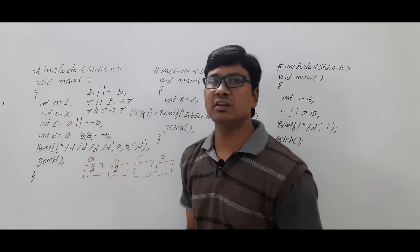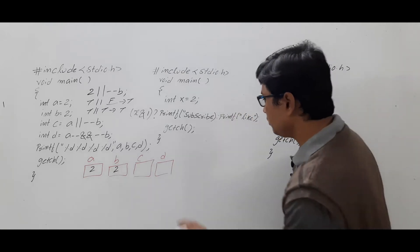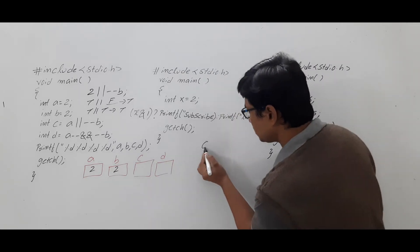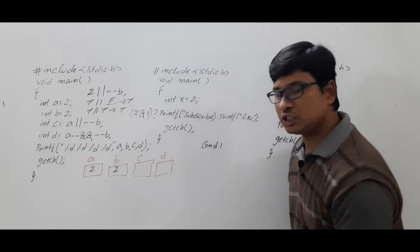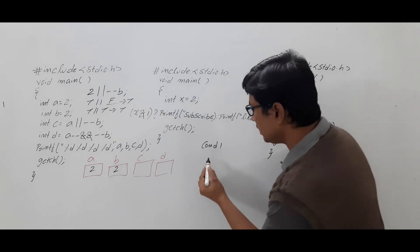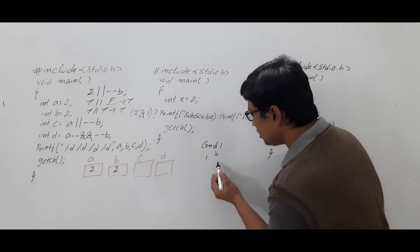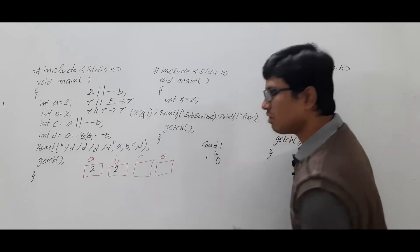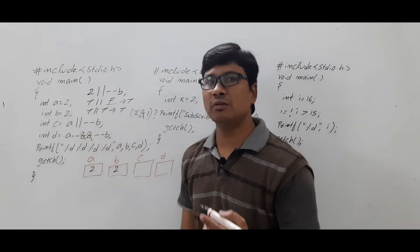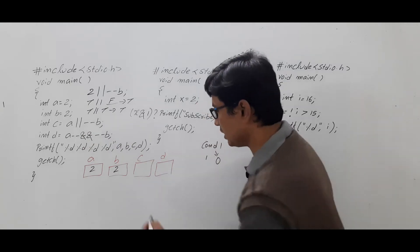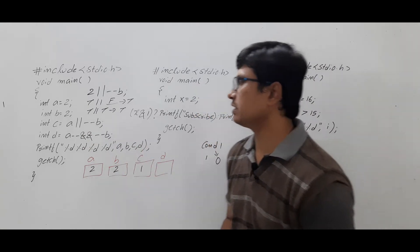Since the entire condition is true, c will get the value 1. If the condition is true it returns 1; if false it returns 0. So this entire condition is true, so c gets the value 1.